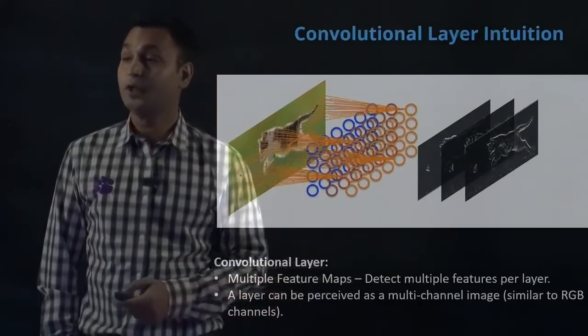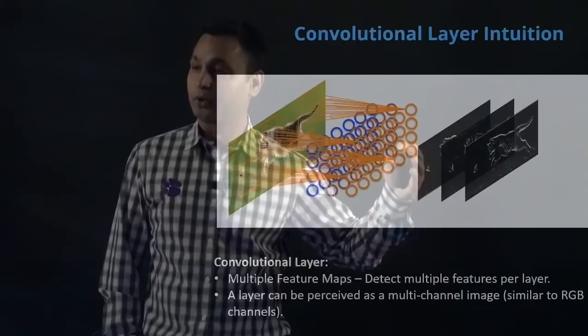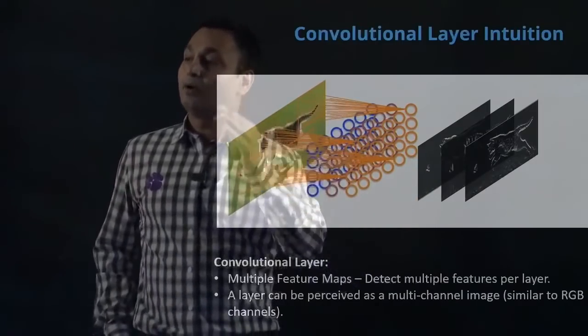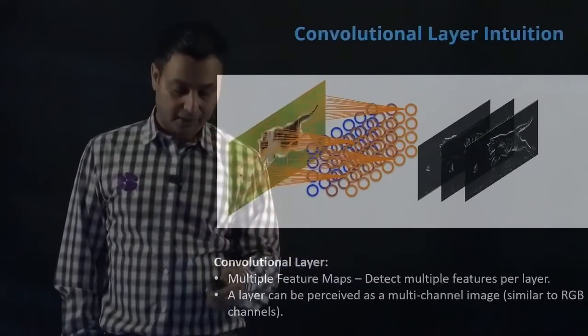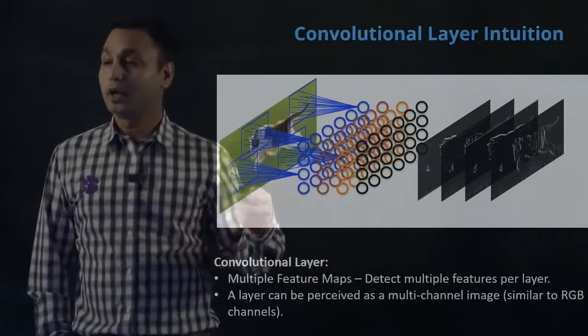If I apply a fourth filter, I'll get a fourth angle to look at the image. Applying different filters allows us to create multiple feature maps. These filters can be thought of as multiple channels of images or multiple ways of looking at the image.